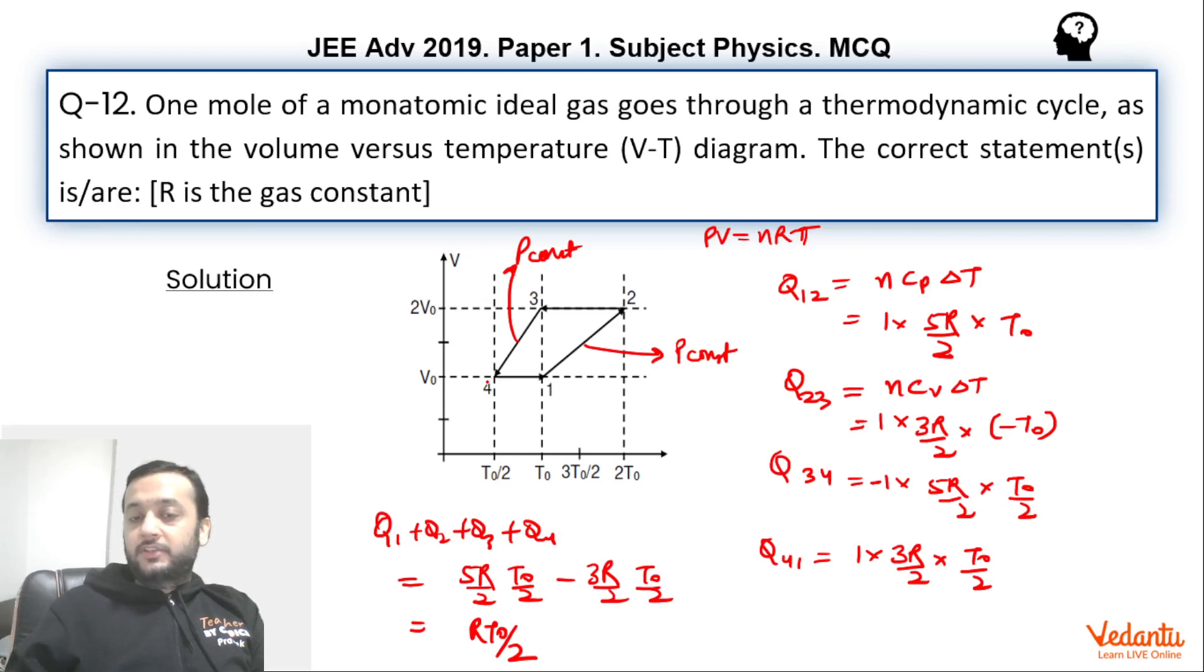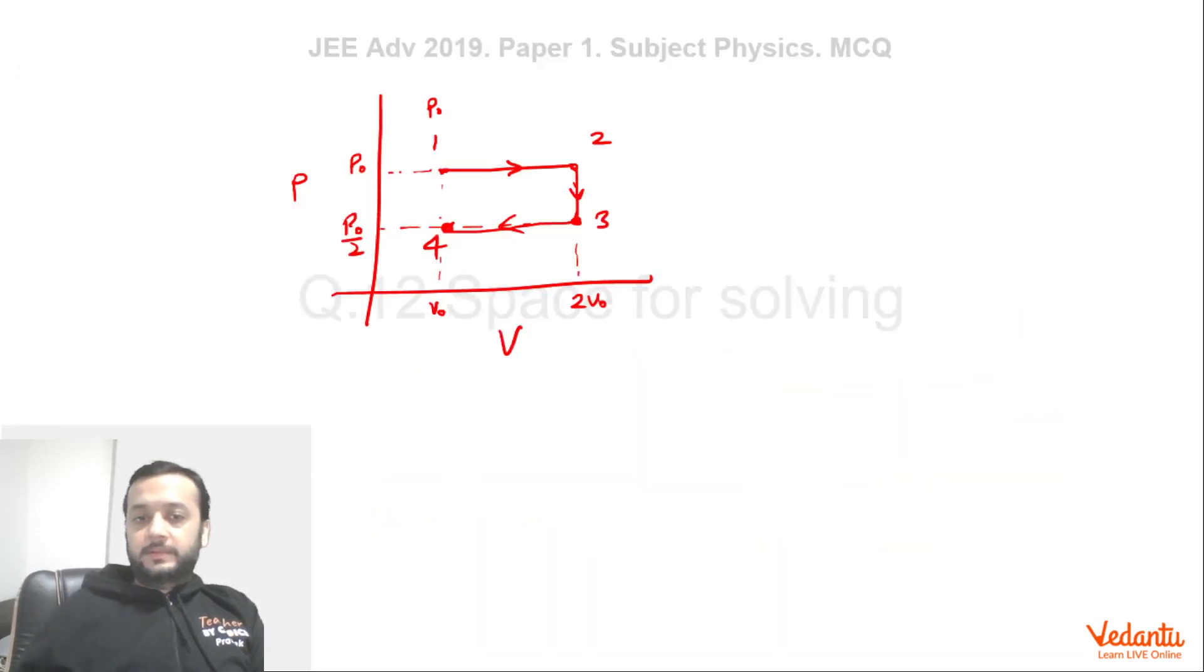And from 4 to 1 isochorically, we have doubled the temperature. That means pressure will also be doubled. So that means we will go back to point number 1. So this is the cycle. This completes the cycle. And this is the rectangle which we get in the PV graph. The area of this will also represent the work done. So I hope you would have enjoyed the solution. That's all. Thank you.